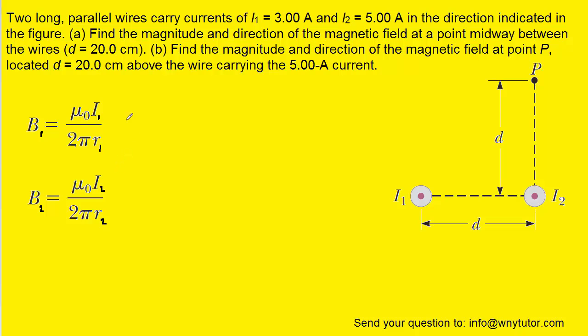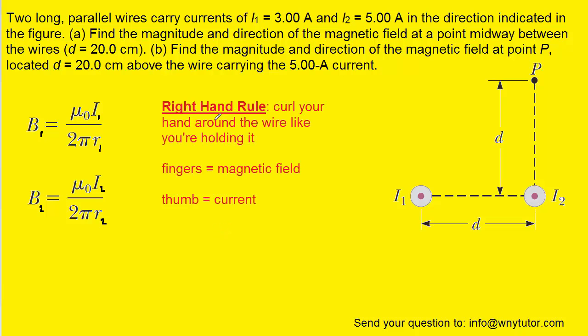Before we plug in all the known values into the formulas, we need to figure out the directions of these magnetic fields, which often becomes the challenging part. To figure out the direction, we follow the right-hand rule. We curl our hand around the wire as if holding it. Our fingers point in the direction of the magnetic field, and our thumb points in the direction of the current.